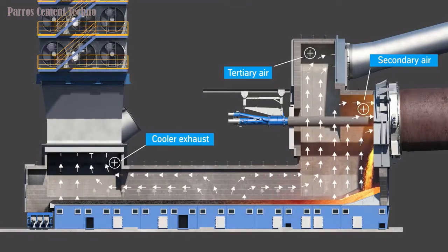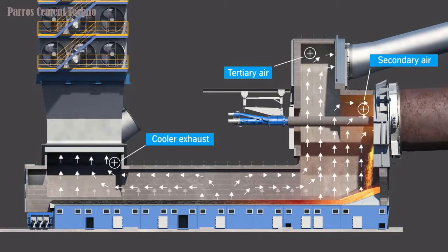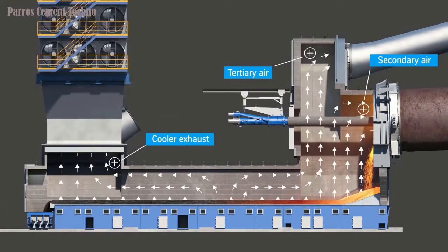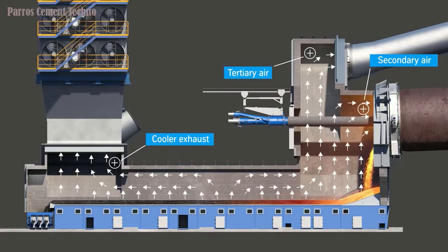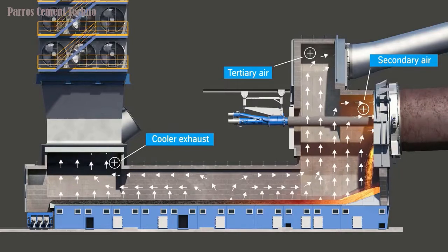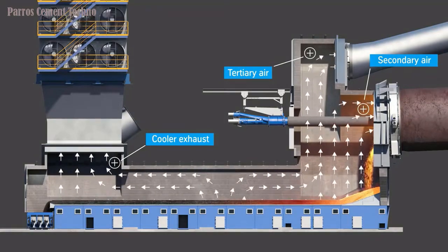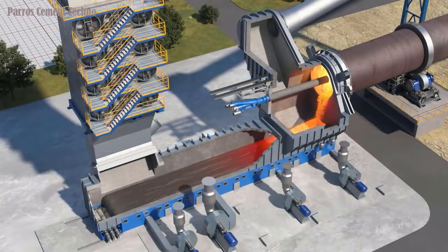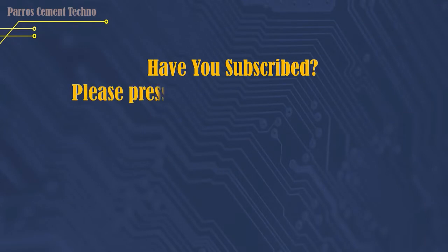Next, the type of CFG cooler. The air flow from the cooling fan flows through the static channel and the moving channel, then the air enters the grate plate cavity and goes to the cooling chamber.